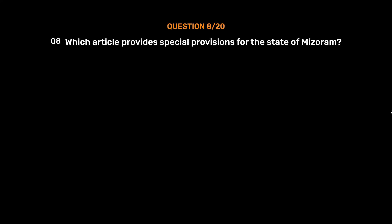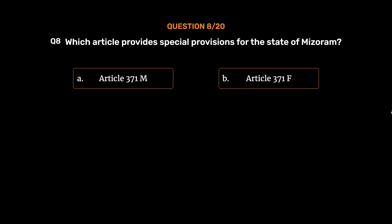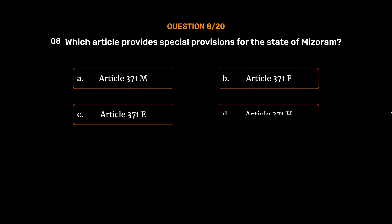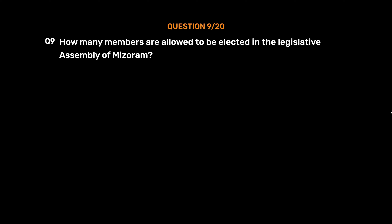Question No. 8: Which article provides special provisions for the State of Mizoram? Option A: Article 371M. Option B: Article 371F. Option C: Article 371E. Option D: Article 371H. The correct answer is Option C: Article 371E.